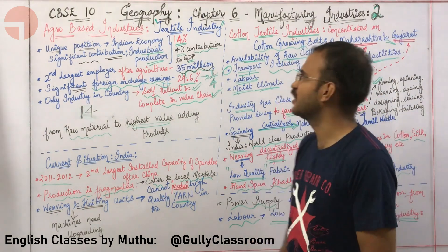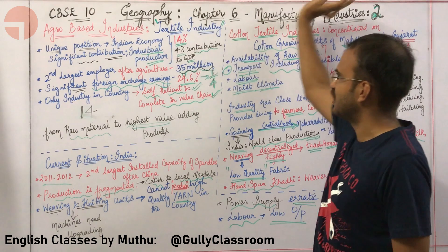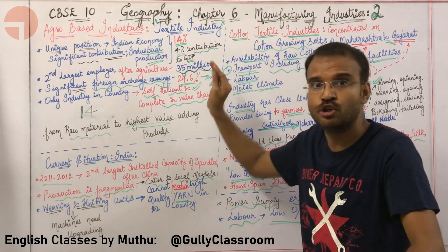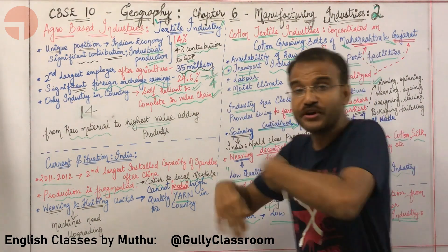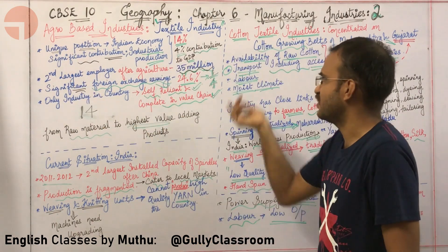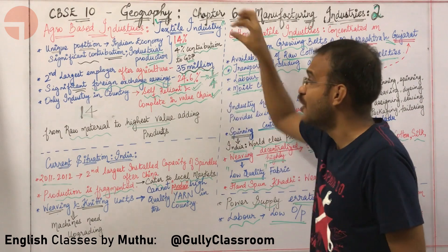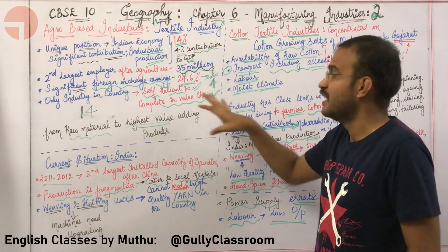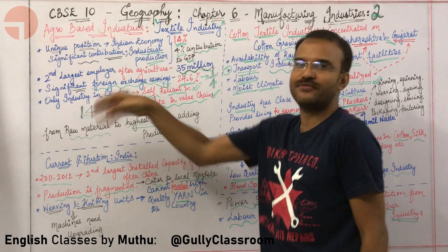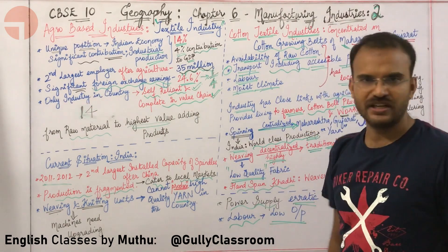Let us recall all the numbers: 14% contribution to industrial production; 4% contribution to GDP; 35 million people employed in textile industries; and 24.6% of foreign exchange earnings — all given by textile industries.